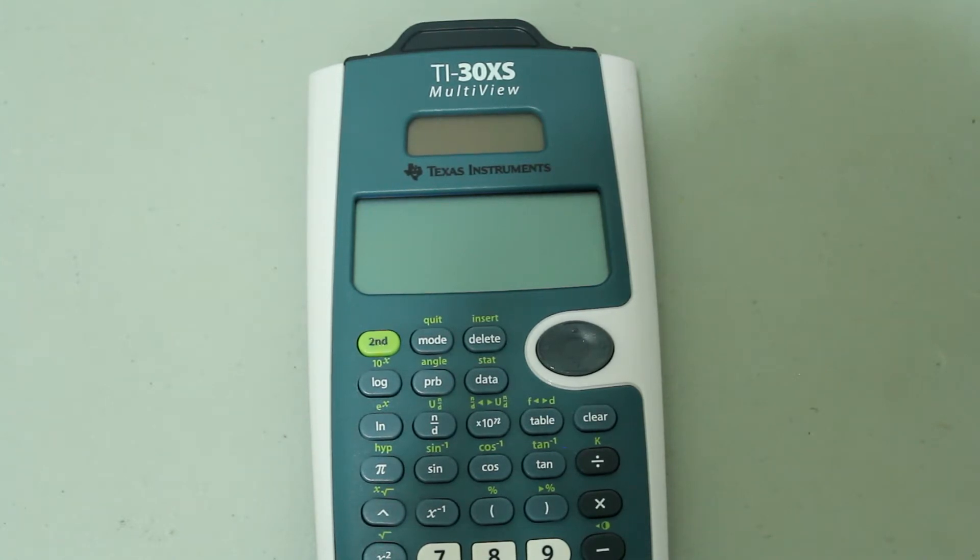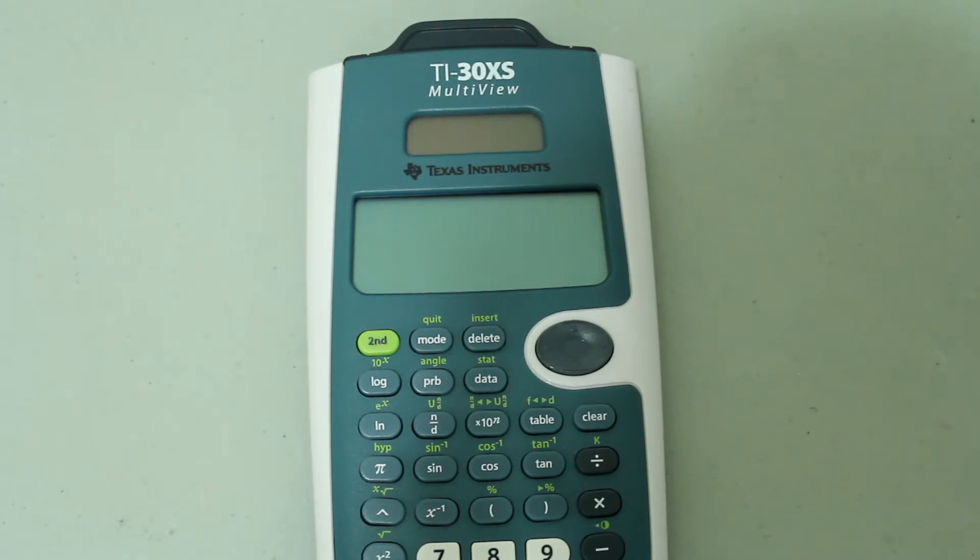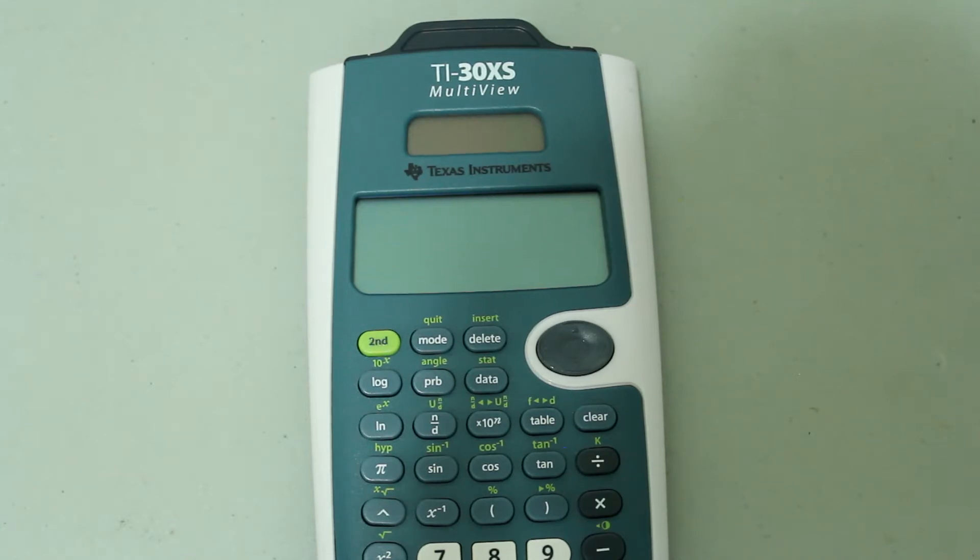The K option allows you to store an operation so you can perform that operation for multiple numbers. For example, let's say you wanted to store an operation where the number you enter is cubed and then 5 is added to it, or the number on which the operation is performed could be varied. This would be the feature to use. So without further ado, let's get to it.